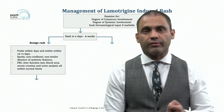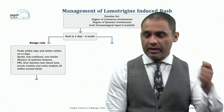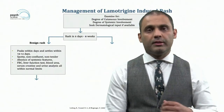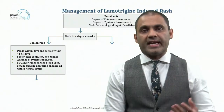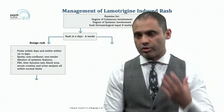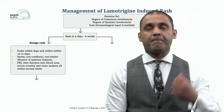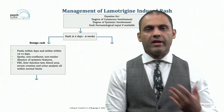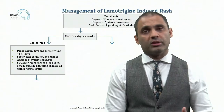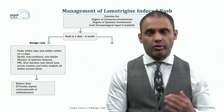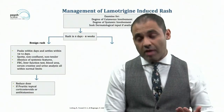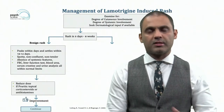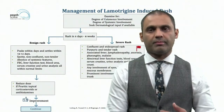A benign rash is spotty, non-confluent, and non-tender, with absence of systemic features — no swollen glands, no ulcers in the mouth, no exfoliation. I would also carry out full blood count, liver function tests, blood urea, serum creatinine, and urine analysis, which are usually all within normal limits. If that's the case, reduce the dose to the next level down, and prescribe topical corticosteroids or antihistamines. If there is improvement, continue until it resolves, then stop the corticosteroids.